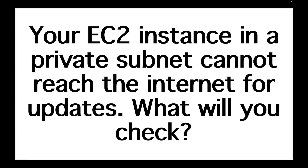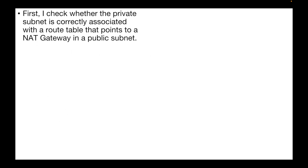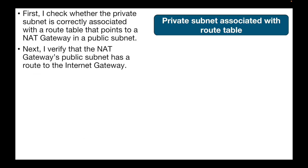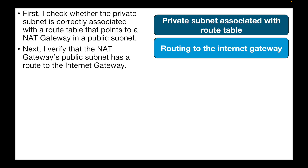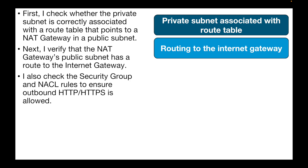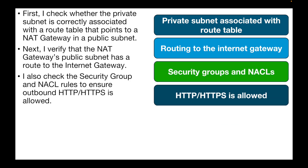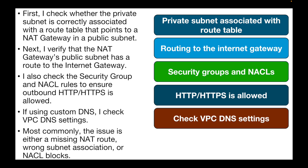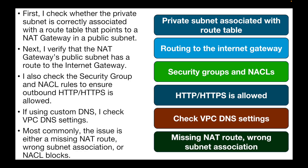The next question is: your EC2 instance in a private subnet cannot reach the internet for updates. What will you check? First, verify whether the private subnet is correctly associated with the route table that points to the NAT gateway in a public subnet. Next, verify that the NAT gateway's public subnet has a route to the internet gateway. Also check security groups and NACLs to ensure they are allowing HTTP and HTTPS traffic. If using custom DNS, check the VPC DNS settings. Most commonly, the issue is either a missing NAT route, wrong subnet association, or your NACL blocking traffic.